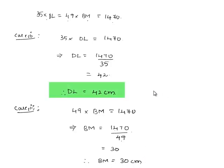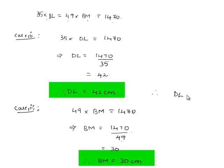Overall, we can conclude that the value of DL is 42 cm and the value of BM is 30 cm.